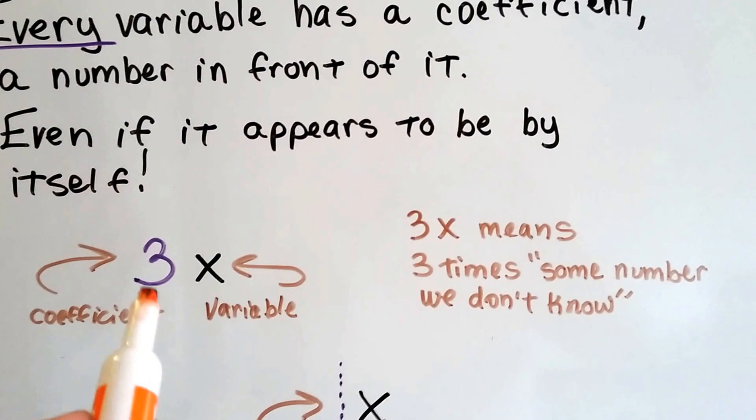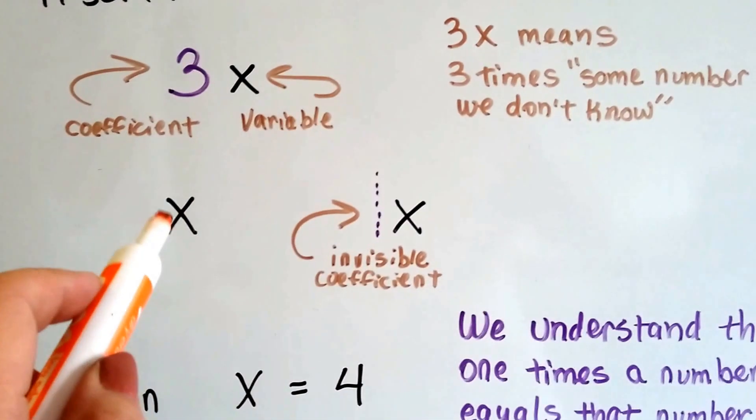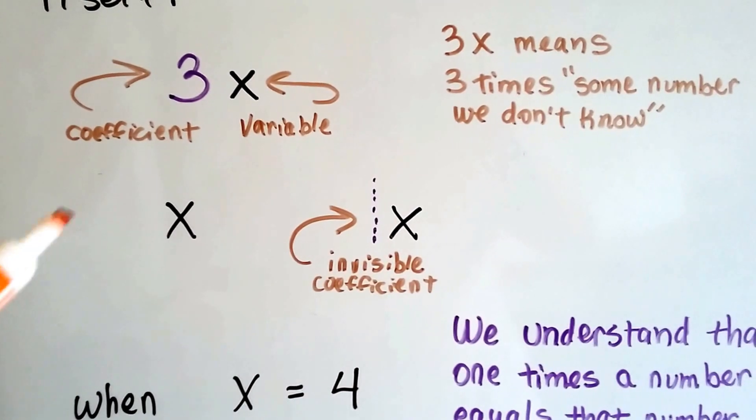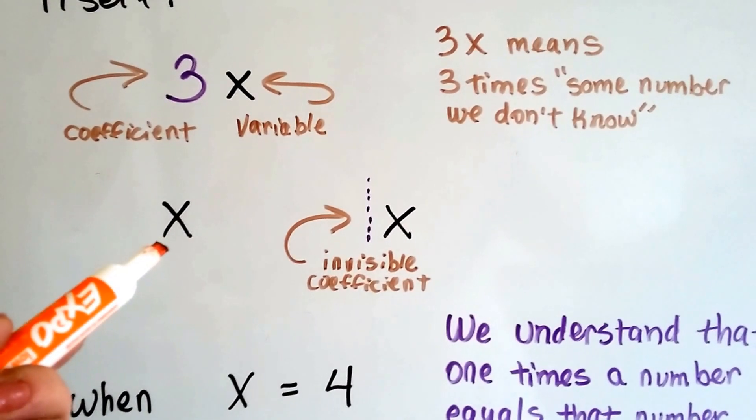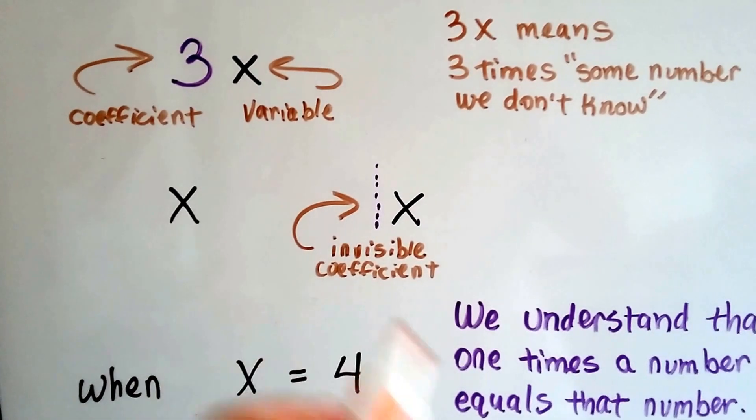This 3x means 3 times some number that we don't know. When we see an x by itself, or an a or y or p or whatever the variable is, if it's by itself, it's got an invisible 1 coefficient in front of it.